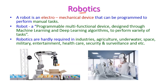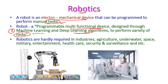Robotics. A robot is a programmed electro-mechanical device to perform manual tasks. In the place of humans we can use robots. A robot is a multi-functional device designed through machine learning and deep learning algorithms to perform a variety of tasks. Robots are widely required in industries, agriculture, underwater operations, space, military, entertainment, healthcare, security and surveillance, and more. Almost all departments are dominated by robotics nowadays.